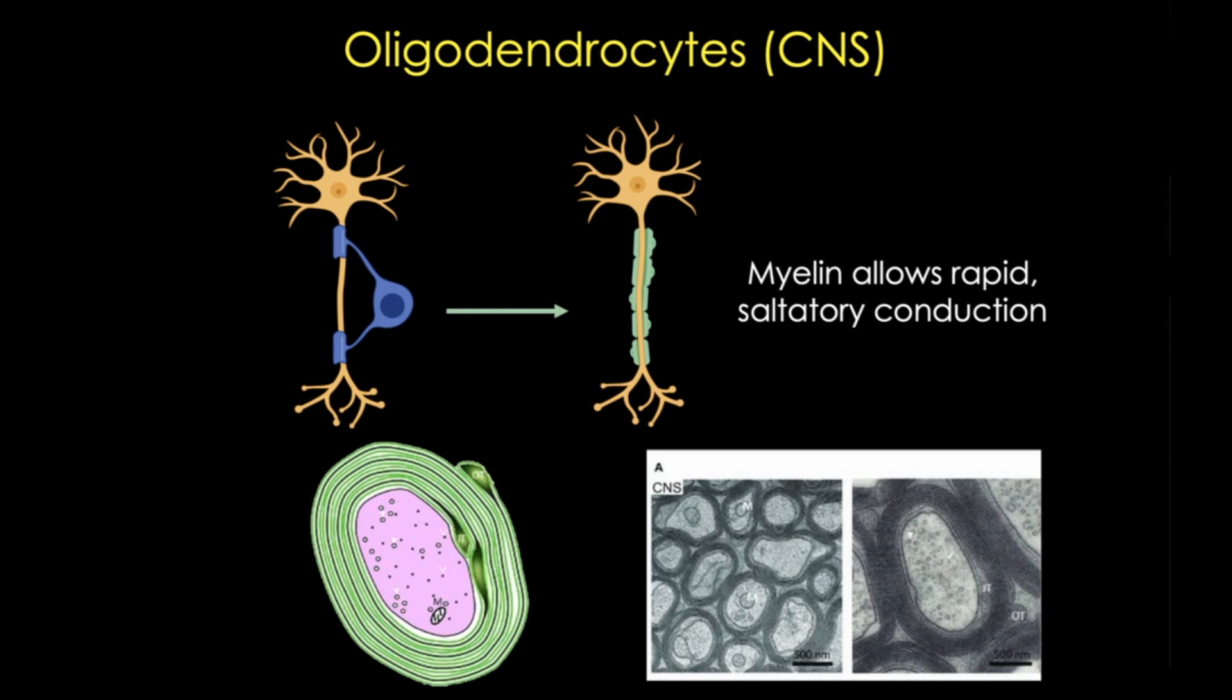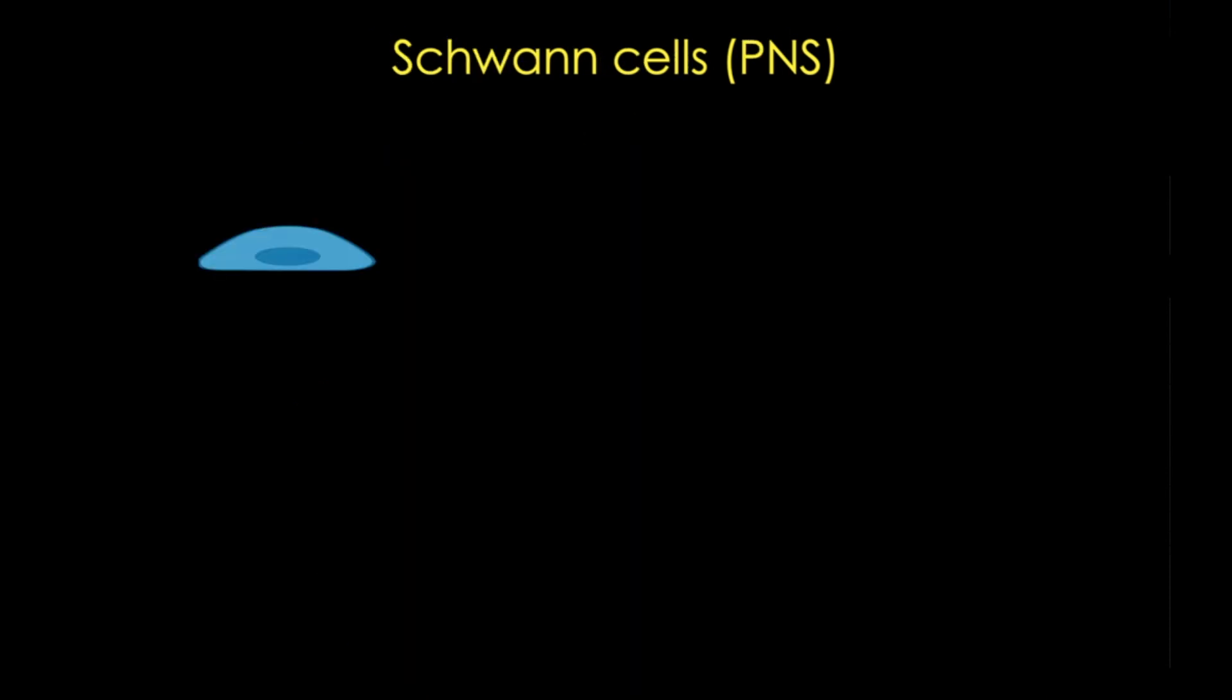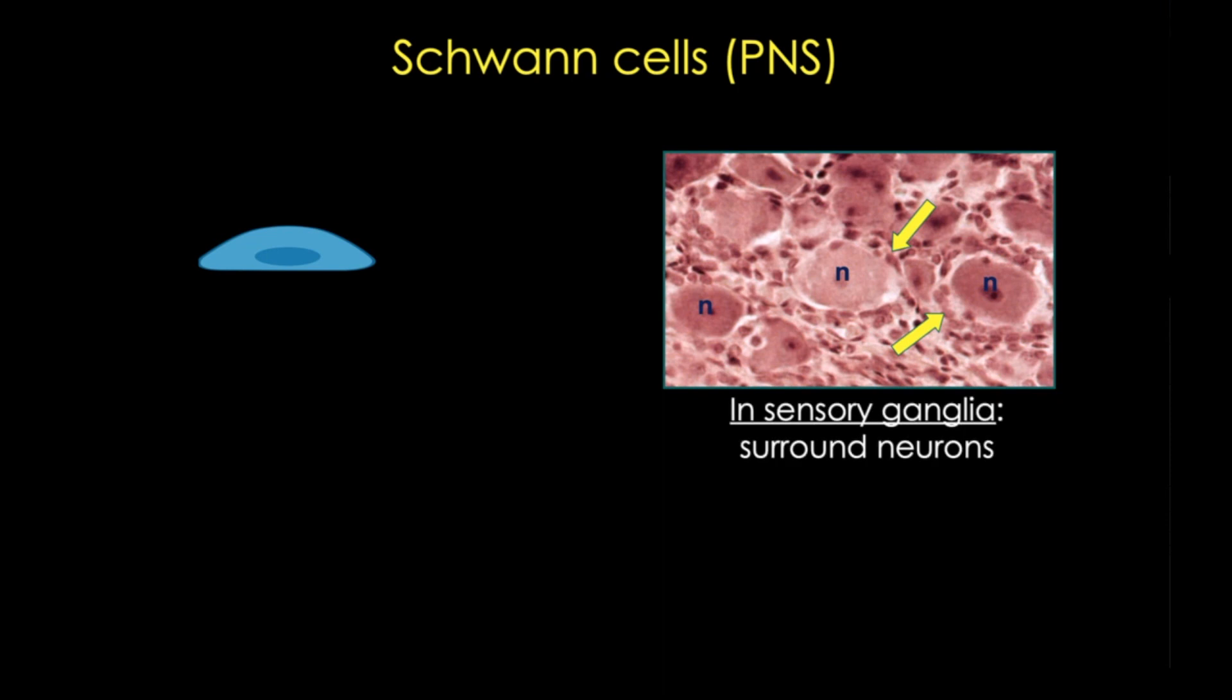In the peripheral nervous system, we have our Schwann cells. These are found in sensory and autonomic ganglia, where they surround neurons. They're also sometimes called capsule or satellite cells. In general, they function similar to astrocytes in these ganglia.